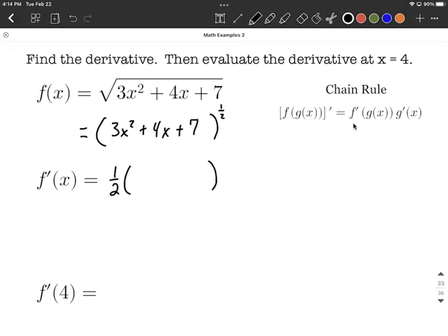So one-half minus one makes negative one-half, and then we copy down everything that was on the inside. So that inner function remains the exact same: 3x squared plus 4x plus 7.